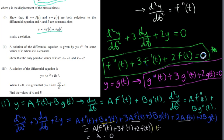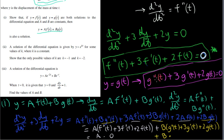We have b times g″(t) + 3g′(t) + 2g(t), taking b out as a factor. And of course we have that g″(t) + 3g′(t) + 2g(t) = 0, so we just have b times 0. So we end up with a times 0 plus b times 0, which is just 0. So that proves that a linear combination of two solutions to a differential equation is another solution of that differential equation.